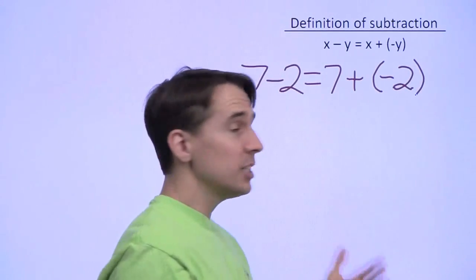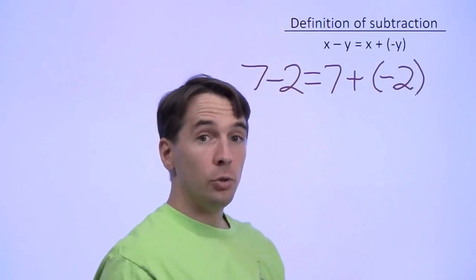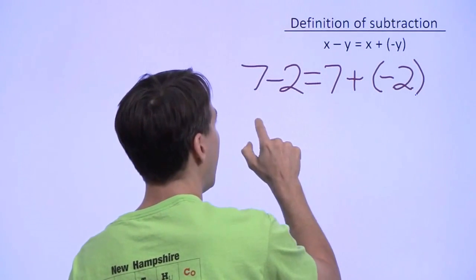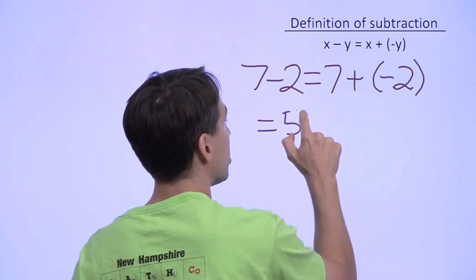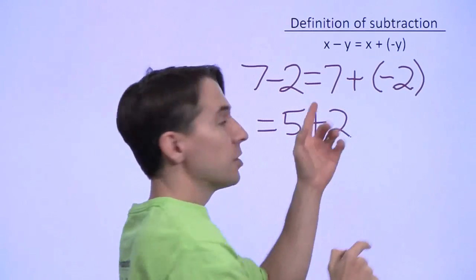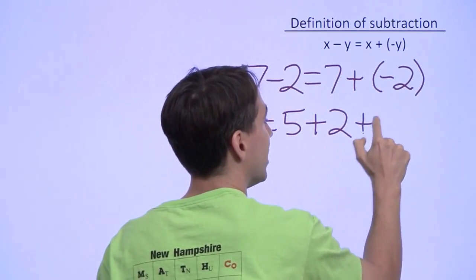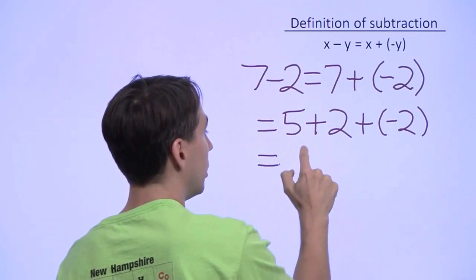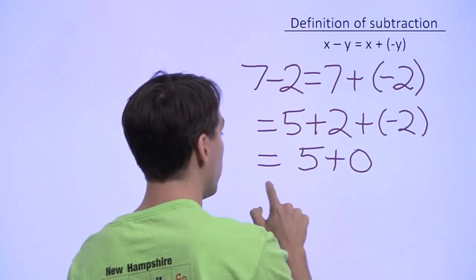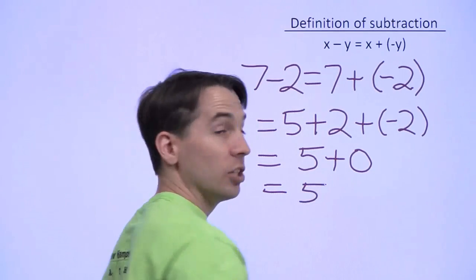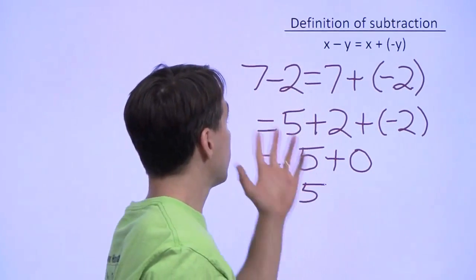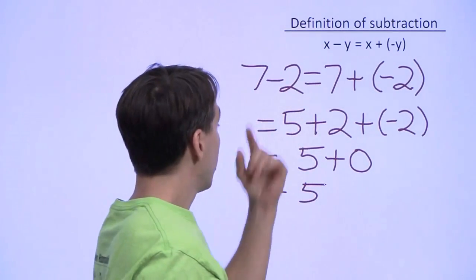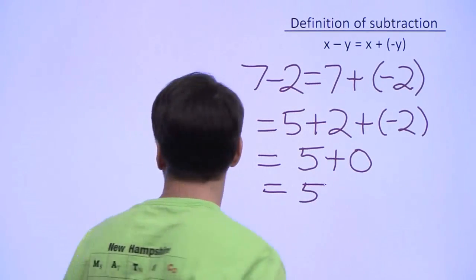In order to add these, we remember that negative 2 plus 2 is 0, so we write 5 plus 2 for 7, because we can add that 2 to negative 2 and get 0. This is 5 plus 0, and 5 plus 0 is just 5. Sure enough, our definition of subtraction gives us the right answer—exactly what we expected.